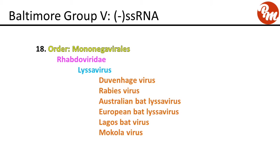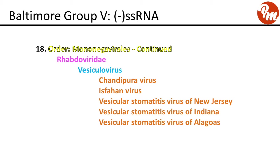Next, order mononegavirales, family Rhabdoviridae, genus lyssavirus. This includes Duvenhage virus, rabies virus, Australian bat lyssavirus, European bat lyssavirus, Lagos bat virus, and Mokola virus. Also in Rhabdoviridae, genus vesiculovirus includes Chandipura virus, Isfahan virus, vesicular stomatitis New Jersey virus, vesicular stomatitis Indiana virus, and vesicular stomatitis Alagoas virus.